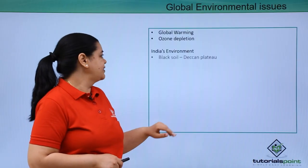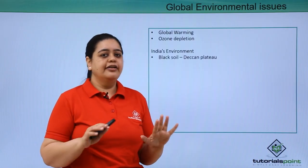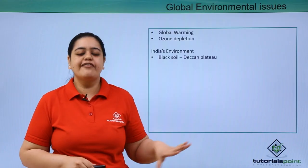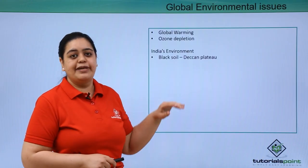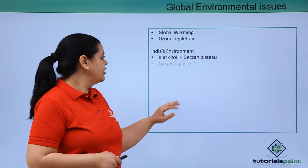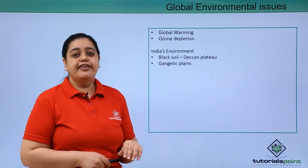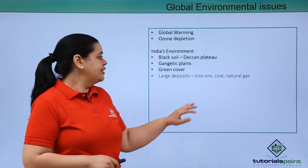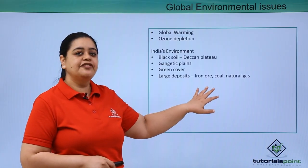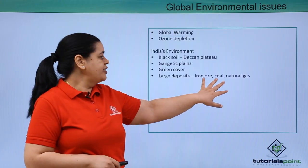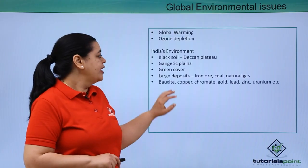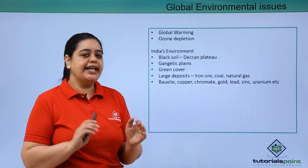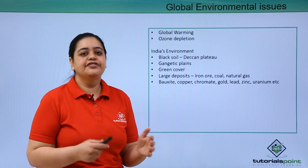India has a very beautiful soil pattern, with different regions having different kinds of soil. The Deccan plateau has black soil, which is considered very good for agriculture. We have the fertile Gangetic plains and green cover which helps protect from environmental damage. In terms of large deposits, India has huge resources of iron ore, coal, and natural gas. We also have bauxite, copper, chromate, gold, lead, zinc, and uranium as natural resources.